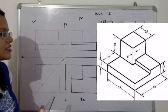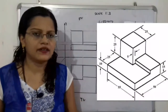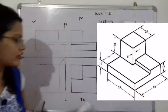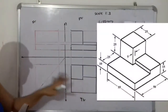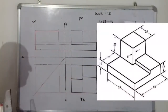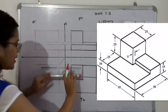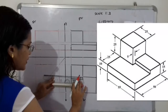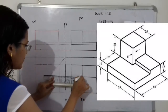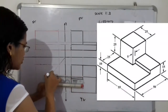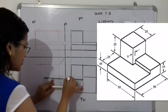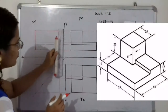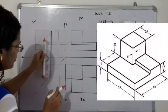Now we move to the side view. Before that, we draw projection lines from the top view to the side view. We take lines from each point of construction — including for the small block — and draw vertical projections through the 45-degree line method.